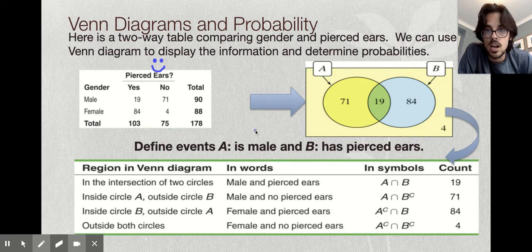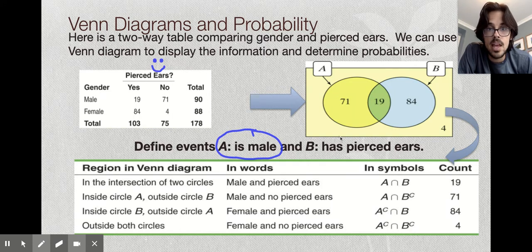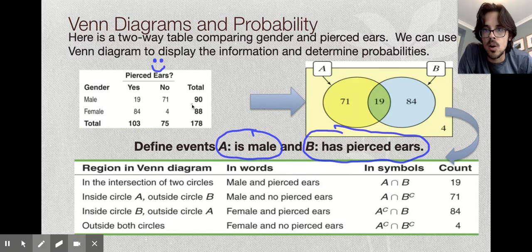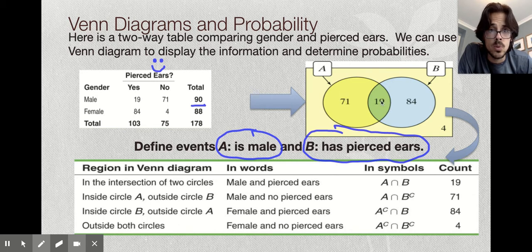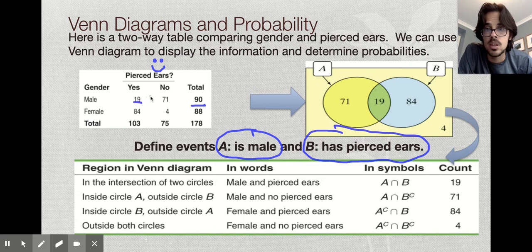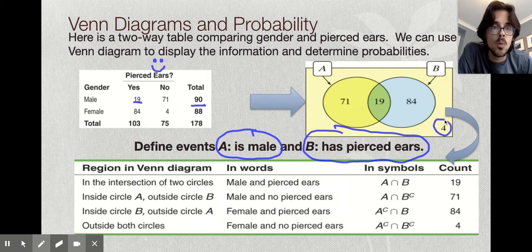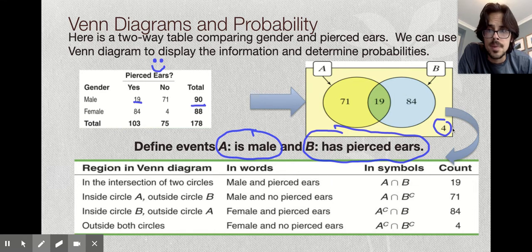The two events that we care about in this problem are male and pierced ears. A is male, B is pierced ears. So this yellow circle right here is all the males. You can see there are 90 of them, and they're broken into the ones who don't have pierced ears and the ones who do. Because B is pierced ears, and these 19 people have both things, so they're in the middle. Then with pierced ears, there's 103 of them all together. There's the 19 that are male, and then there's the 84 that are female. And you'll also have the number where neither of these things applies. Those are going to be females without pierced ears, and that would go on the outside of the circles.